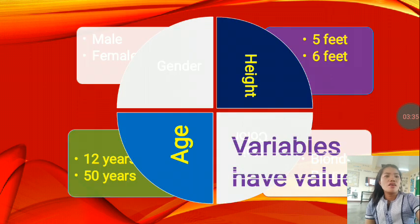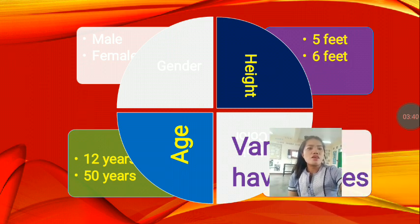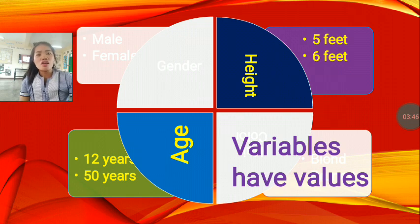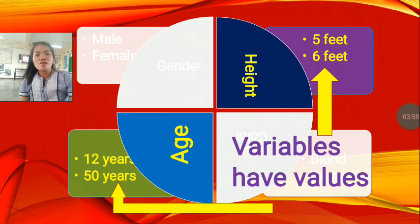Now, for height and age, the variables here have values. That is what we have noticed. The variables have values like five feet, six feet, 12 years, 50 years.